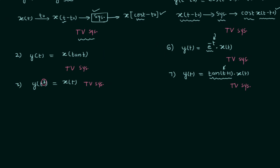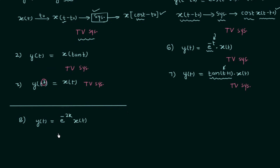In the eighth problem, y(t) = e^(−2k)·x(t). This time we have a coefficient, but the coefficient is not a function of time — it contains k, not t. There is no time scaling and no time-dependent coefficient, so the system is time invariant.